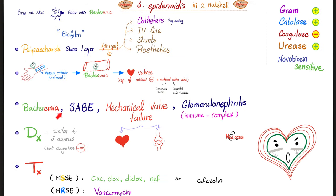How can we diagnose it? Just like Staph aureus, except that Staph epidermidis is coagulase negative. As for treatment, if it is sensitive: oxacillin, cloxacillin, dicloxacillin, nafcillin. If it's resistant, go with vancomycin. Staph epidermidis is urease positive and novobiocin sensitive.